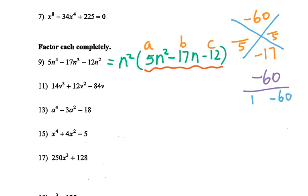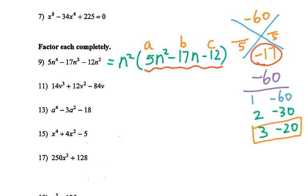Now we try to find the factor pairs for negative 60, getting started from 1 times negative 60 — adding gives negative 59 — keep going: 2 times negative 30, 3 times negative 20. Adding 3 and negative 20 gives negative 17, so 3 and negative 20 is the answer. Write down 3 and negative 20. Reduce: you get negative 4 and 1. The variable is n, so check: 5n times 1n gives 5n squared, and negative 4 times 3 is negative 12. This is the correct answer.